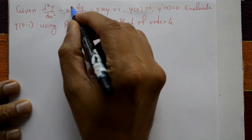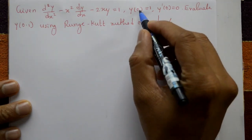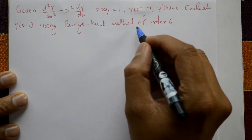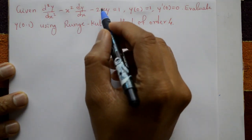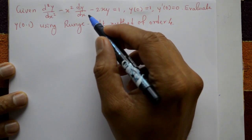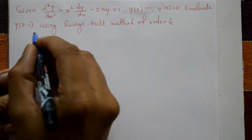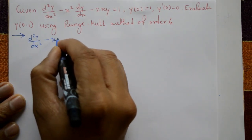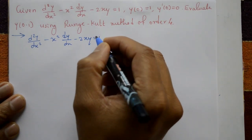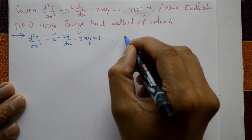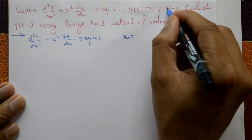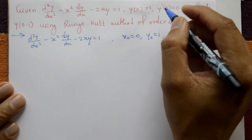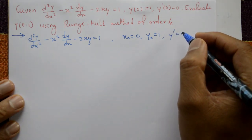Given: d²y/dx² minus x² times dy/dx minus 2xy equals 1. Initial conditions: y(0) = 1, y'(0) = 0. Evaluate y(0.1) using the Runge-Kutta method of order 4. This is a second-order differential equation. Here x₀ = 0, y₀ = 1, and z₀ (which is y') = 0.